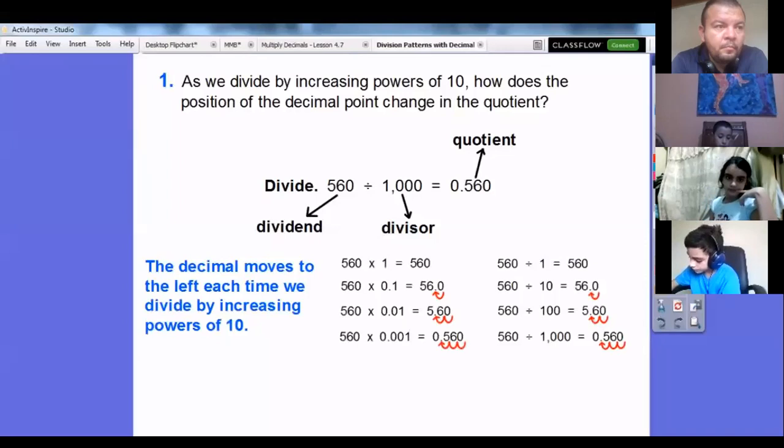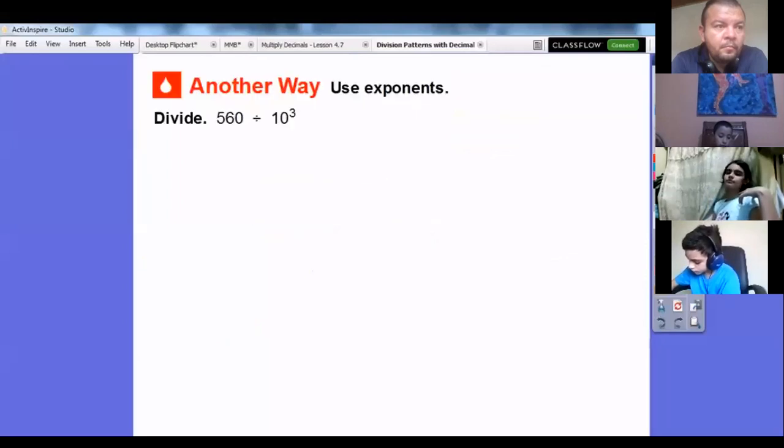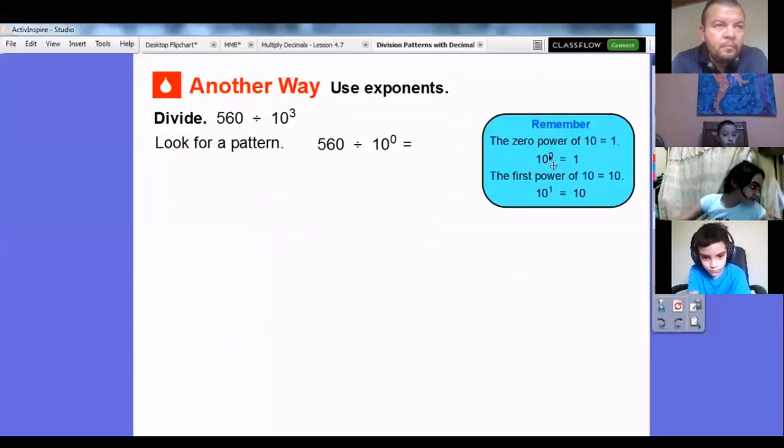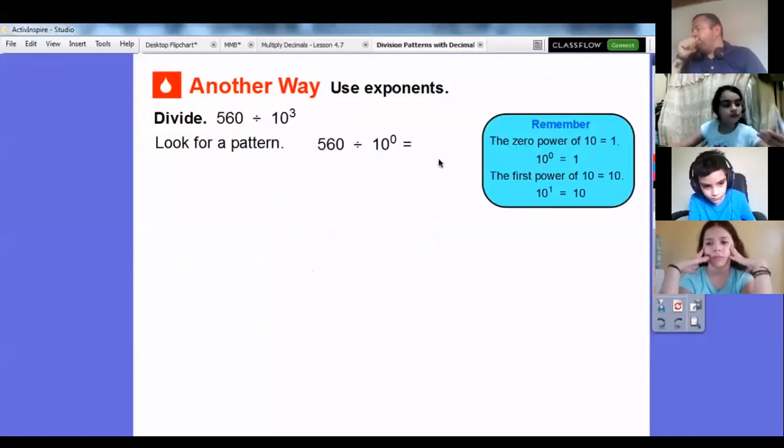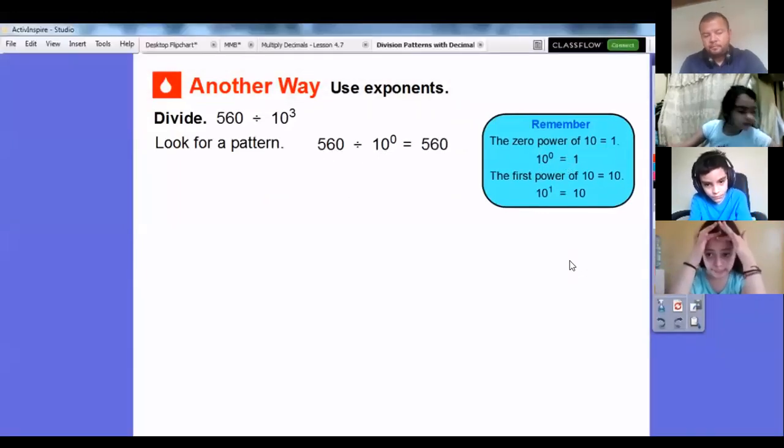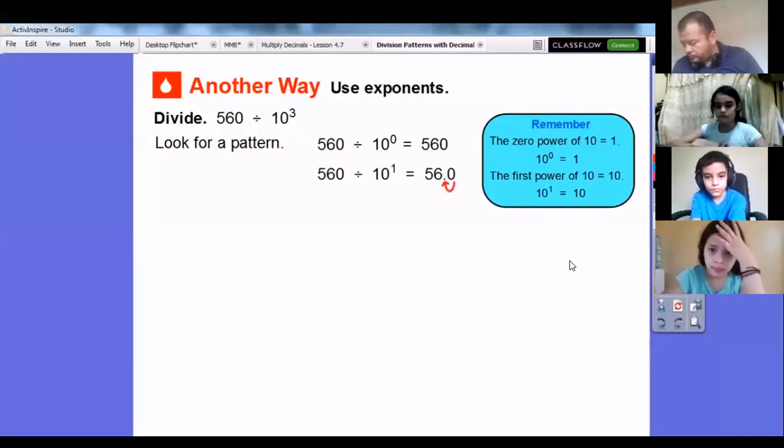Let's try another one. Let's use exponents. 1,000 is 10 to the third, so let's divide 560 by 10 to the third. Let's look for patterns. 560 divided by 10 to the zero—remember, the zero power of 10 equals 1. In fact, anything to the zero power is 1. This is the same as 560 divided by 1, which is just 560.